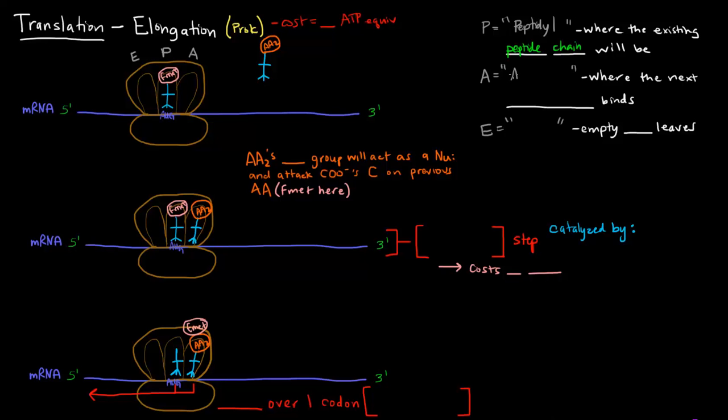The A site is the acceptor site, where the next aminoacyl tRNA binds. Then the last site, the E site, is the exit site where the empty tRNA leaves.